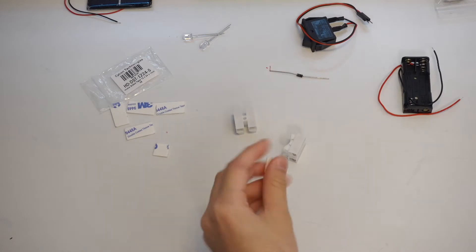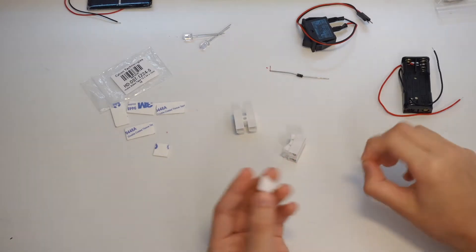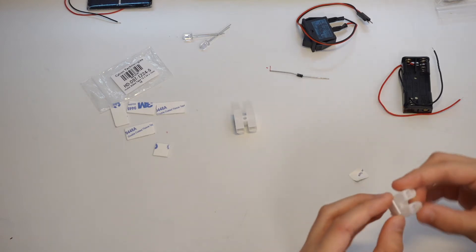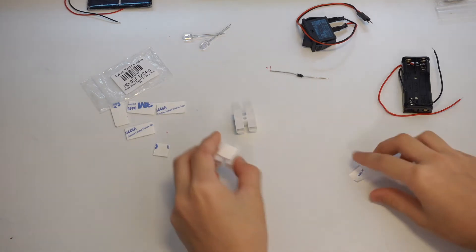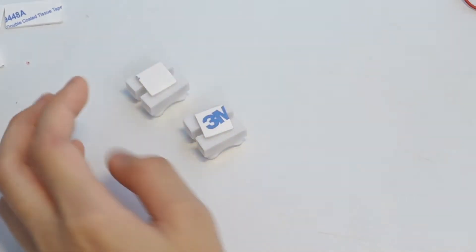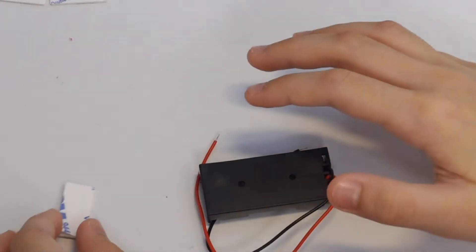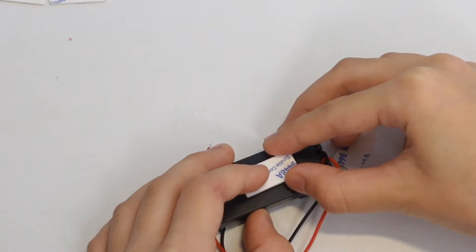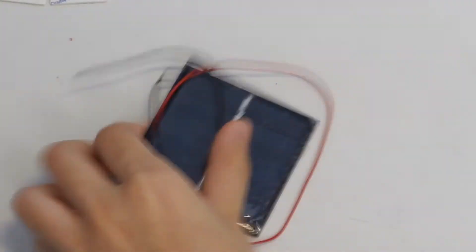It comes with the double-sided tape. And let's apply the double-sided tape. Since we are at it, let's do it for the battery holder also. And the solar panel.